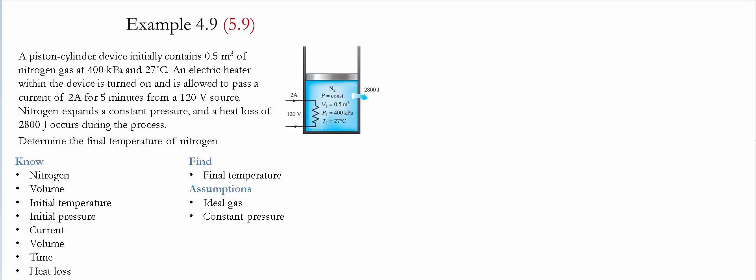An electrical heater within the device is turned on and allowed to pass a current of 2 amps for 5 minutes from a 120 volt source. Nitrogen expands at constant pressure, and a heat loss of 2800 joules occurs during the process. The goal is to determine the final temperature of nitrogen.